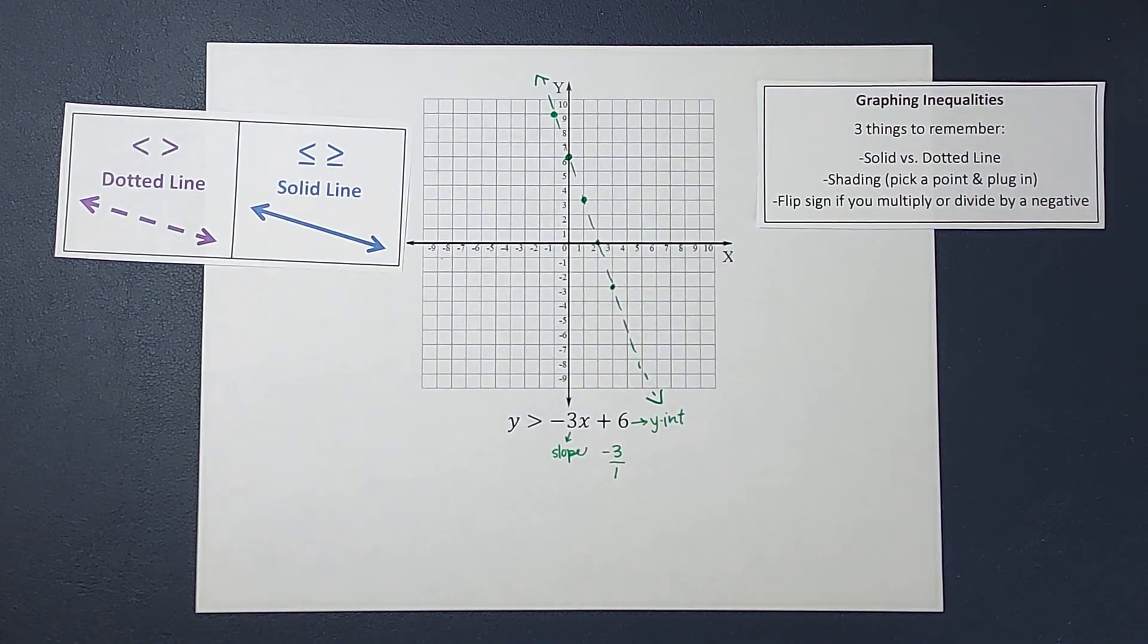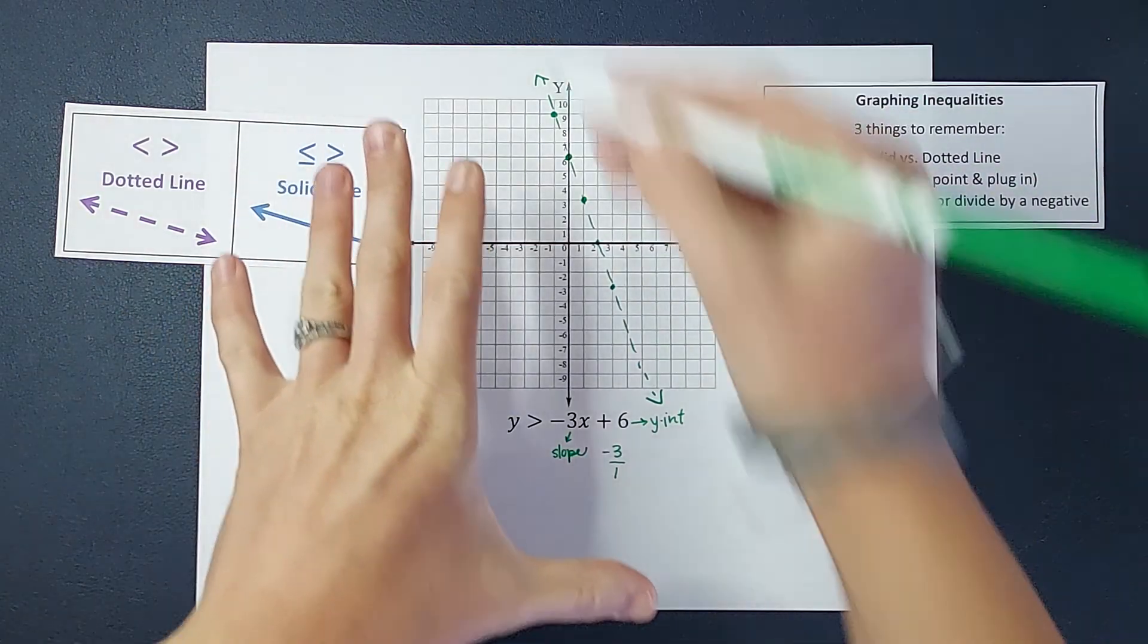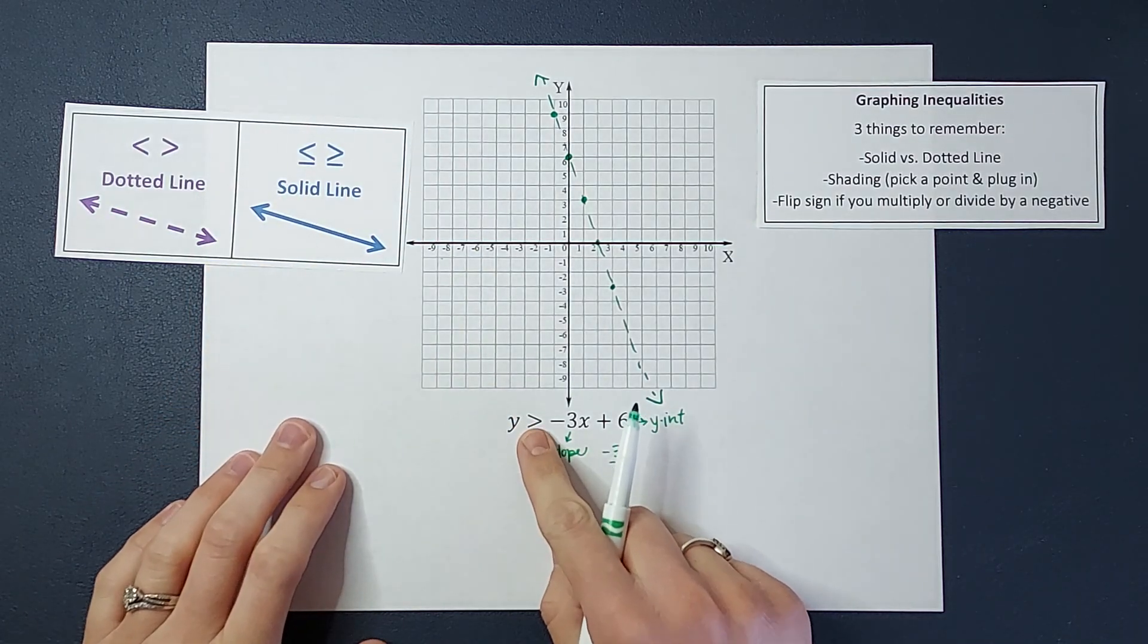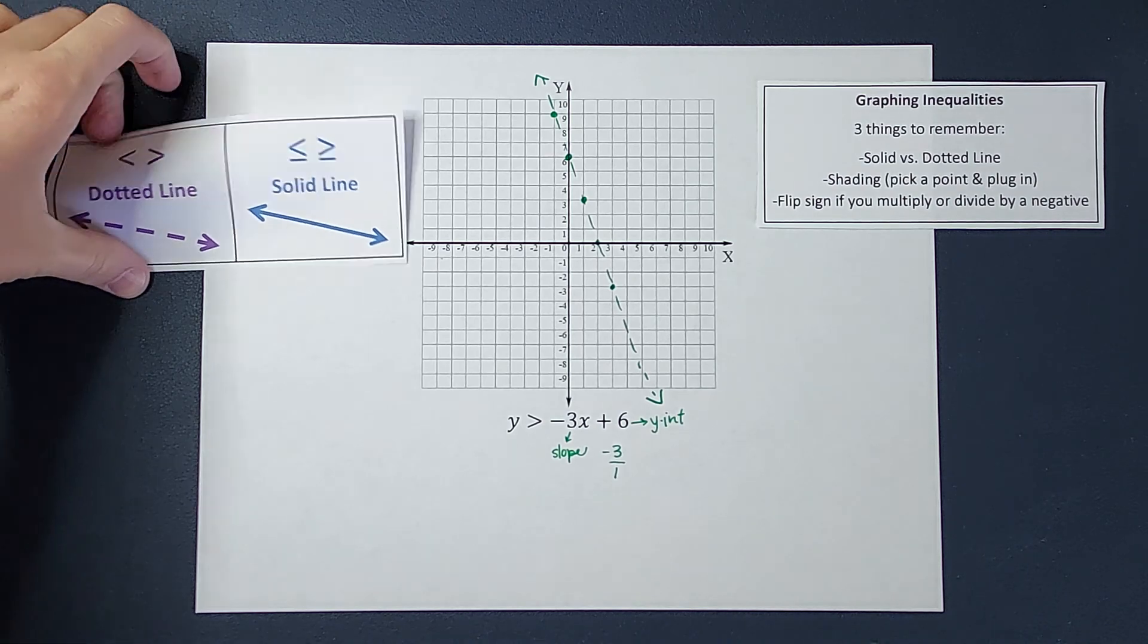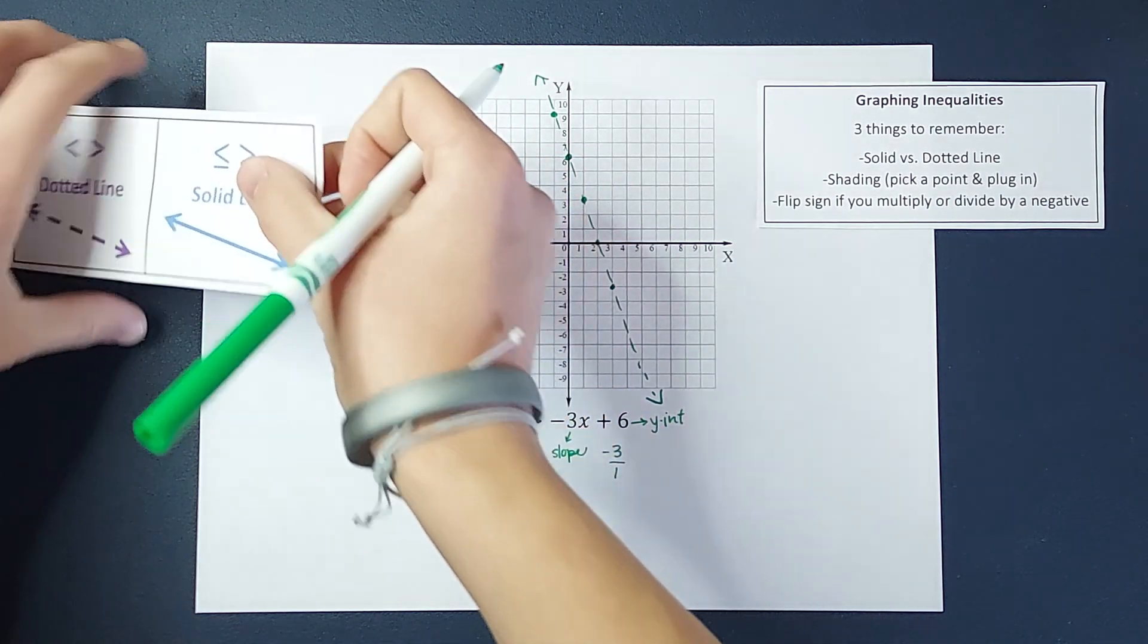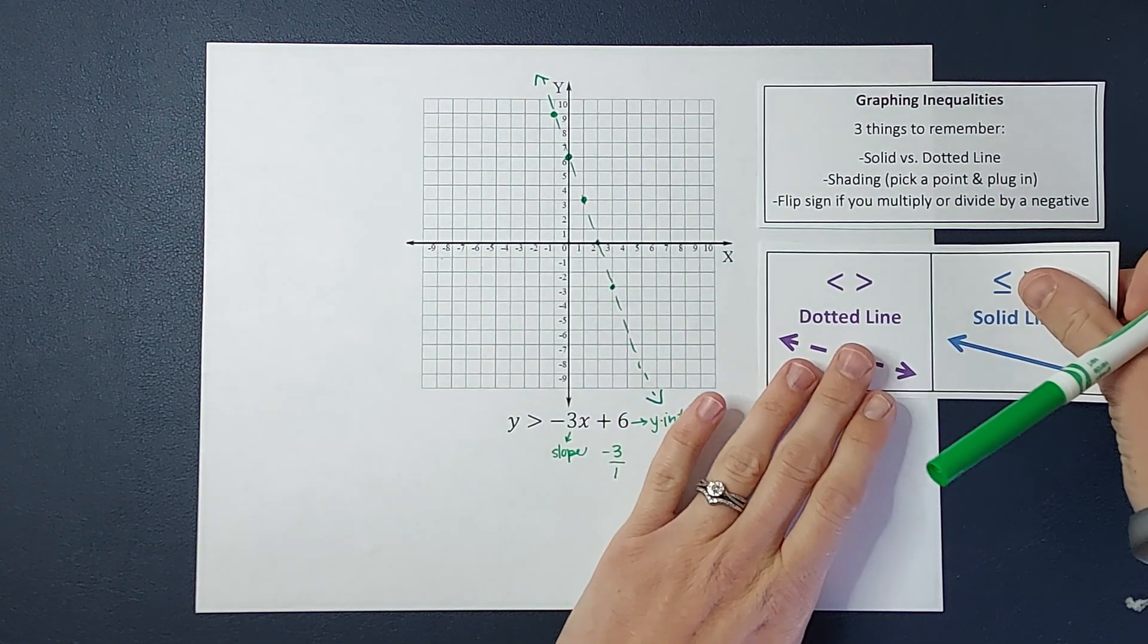Now I can't tell you how many times I've been graphing these, and I draw the line, and then it's like, oh crap, it was supposed to be a dotted line, and you go and try and kind of erase it, which I mean, that works, but it is easier if you just remember it from the beginning.